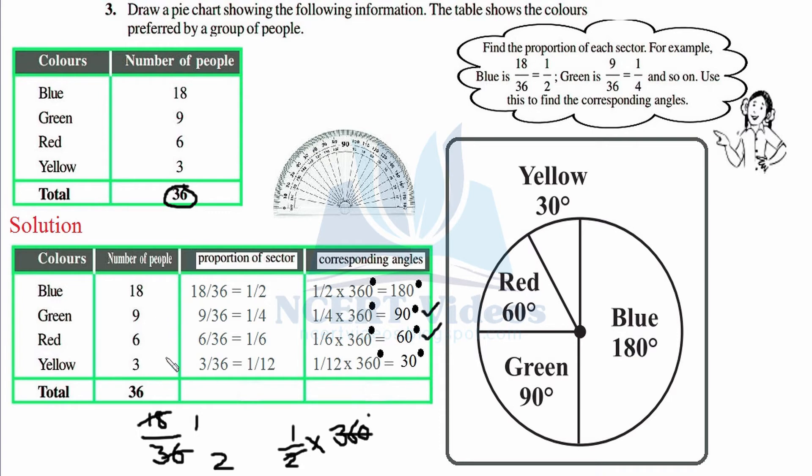For yellow, we have 3 people, so 3 out of complete 36. 3 goes into 3 once, 12 times 3 is 36, therefore the ratio is 1 over 12. One-twelfth out of 360 degrees - that is the central angle. Cancel it with 12: 12 goes into 12 once, 12 times 3 is 36, so 30 times 1 is 30 degrees.